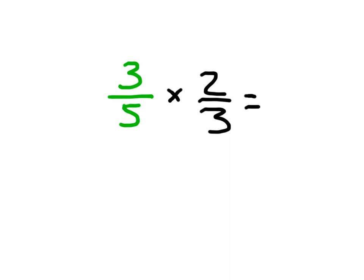What we're going to do is we're just going to go ahead and multiply the numerators. 3 times 2, and we're going to go ahead and multiply the denominators. 5 times 3. 3 times 2 is 6, and 5 times 3 is 15.